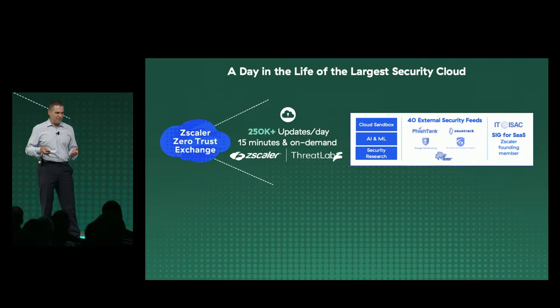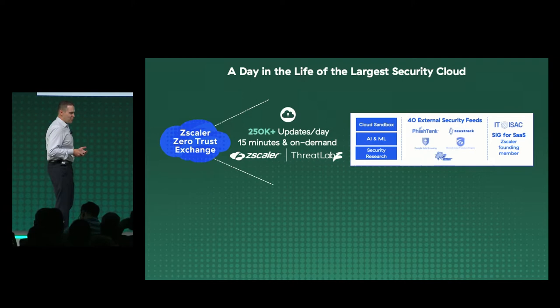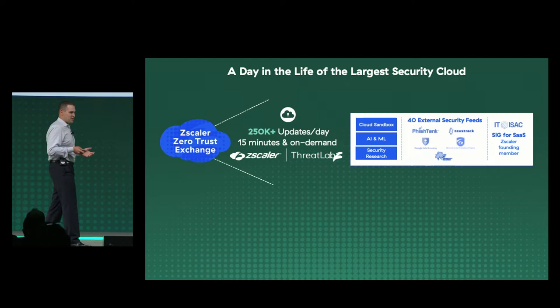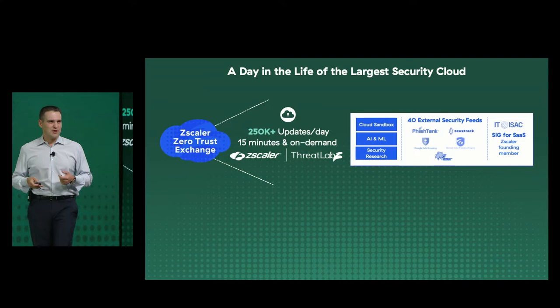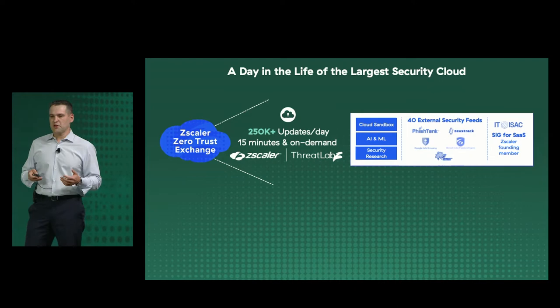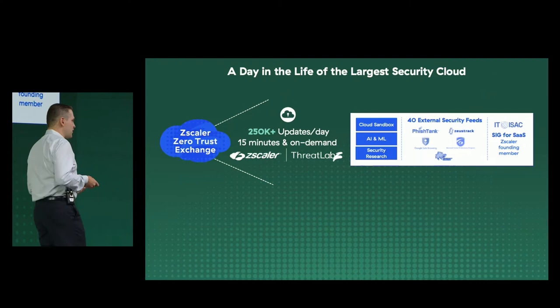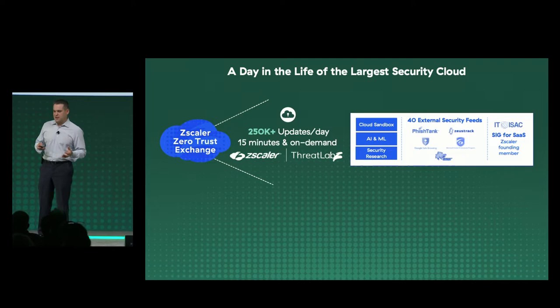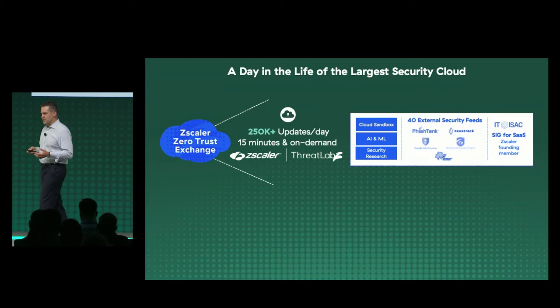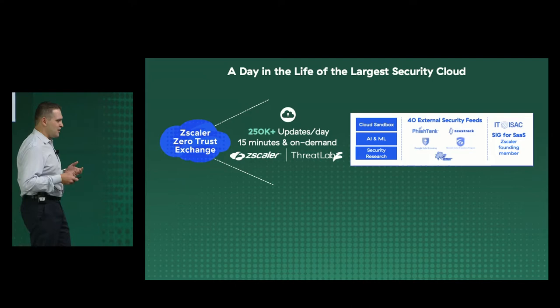Where do those 250,000 updates come from? We collect 40 external feeds from various industry security providers. We have a sandbox product where about 250,000 files from our customers end up — files that don't necessarily look good. Then there's AI/ML, which looks at websites, when they're registered, what they look like. And then the dangerous work that the security research and Deepen's team does. All of that culminates to 250,000 updates per day, each of which has to be pushed globally. We invest heavily in automation to make sure these updates get delivered securely, fast, and don't harm our customers' traffic.